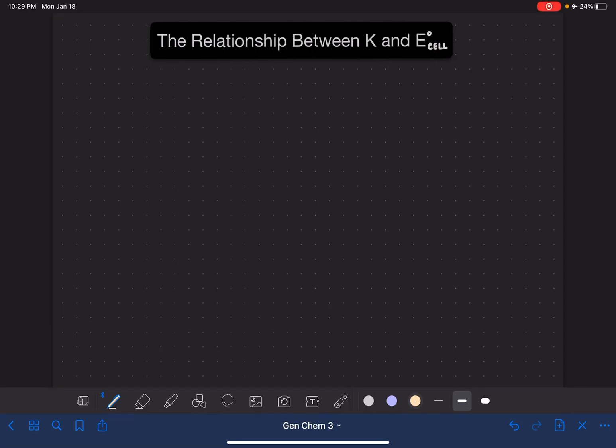This video is going to teach you the relationship between the equilibrium constant K and the value of E cell. To understand this relationship, we're going to be using two equations. The first equation is one that we learned quite a while ago, the relationship between Gibbs free energy and the equilibrium constant.